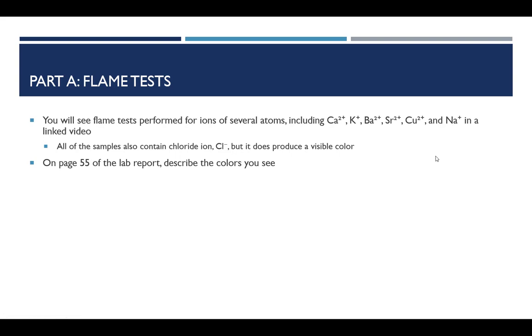So on page 55 of your lab report, you want to describe the colors that you see. Some of these samples might give off one color, some might be two. You might see a quick change in the colors. So for example, you don't want to write down yellow if it's yellow green, or you don't want to write down green if it's blue green. You want to be as descriptive as you can.